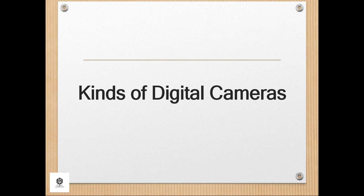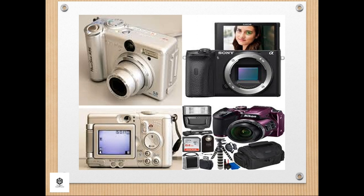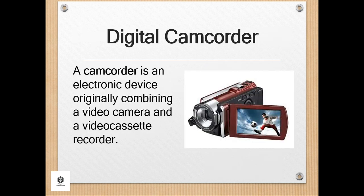Let's talk about the kinds of digital cameras. First, the digital camcorder. A camcorder is an electronic device originally combining a video camera and a videocassette recorder. The earliest camcorders were tape-based, recording analog signals onto videotape cassettes. In 2006, digital recording became the norm, with the tape replaced by storage media such as mini-HD, micro-DVD, internal flash memory, and SD cards. More recent devices capable of recording video are camera phones and digital cameras primarily intended for still pictures.